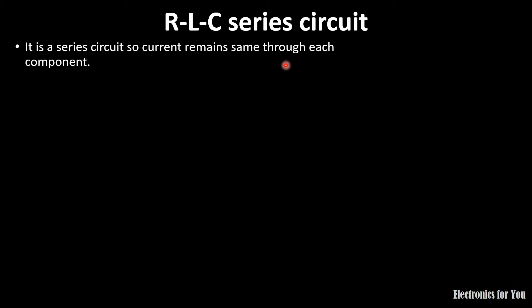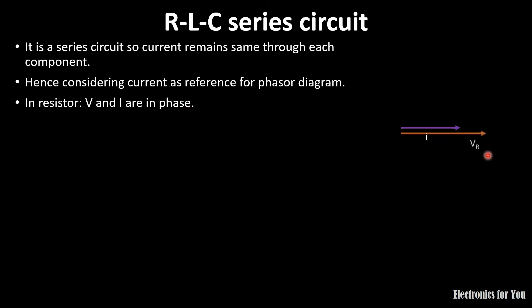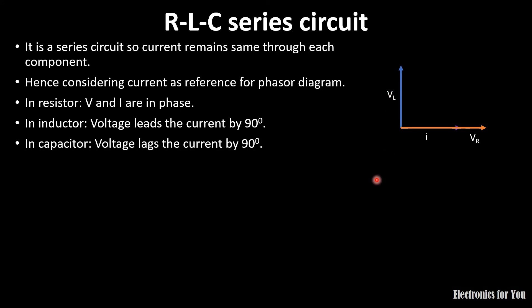In a series circuit, current remains the same throughout, so we will consider current as the reference in our phasor diagram. The reference is always taken on the horizontal axis, that is the x-axis. In the case of resistance, voltage and current are in phase, so VR is drawn along the reference. In the inductor, voltage leads the current by 90 degrees — lead is anti-clockwise — so VL is drawn upward. And VC, the voltage across the capacitor, lags the current by 90 degrees, so it is drawn downward.